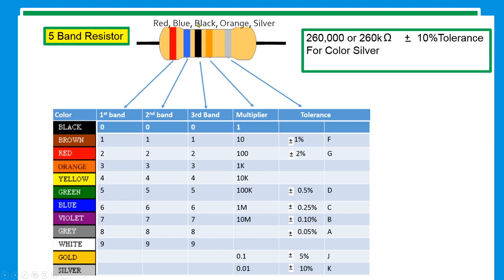The next one is black, zero. The next one is orange for our multiplier. Orange is 1k, that's why I write here three zeros.